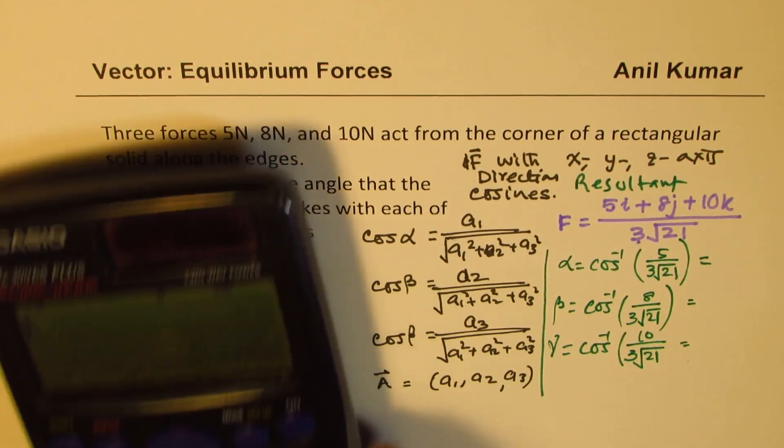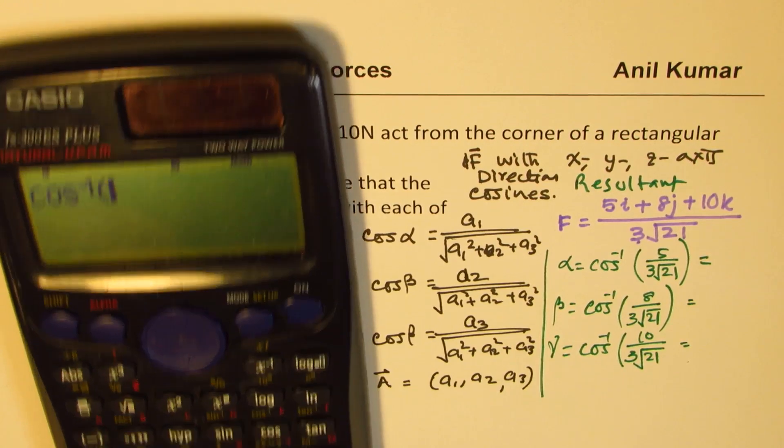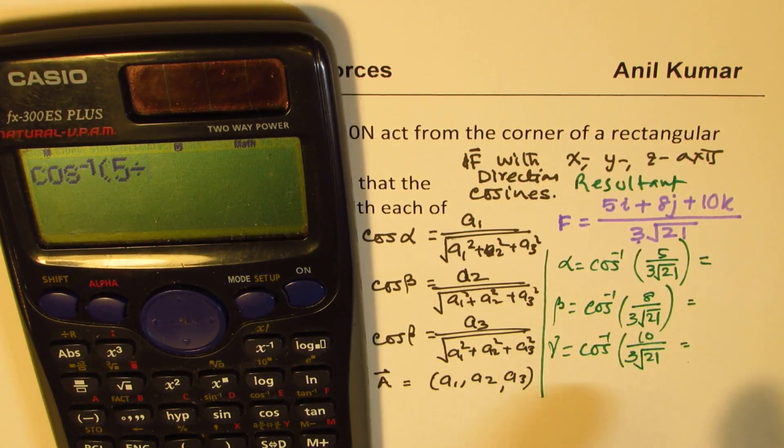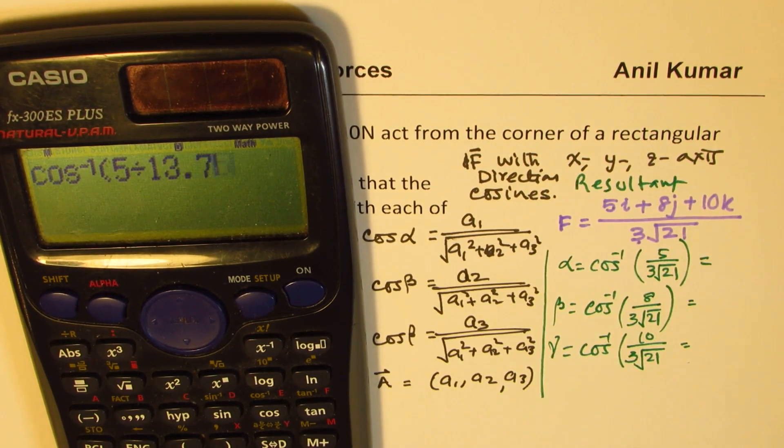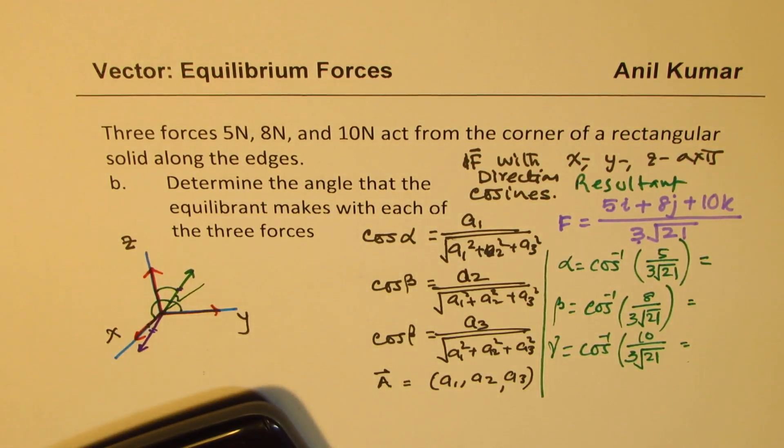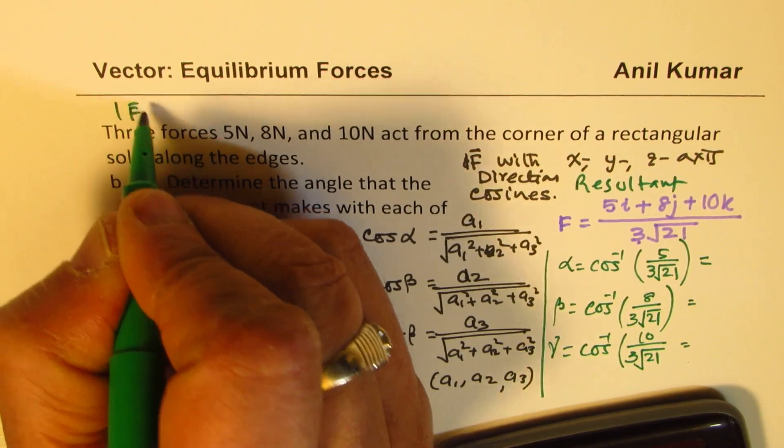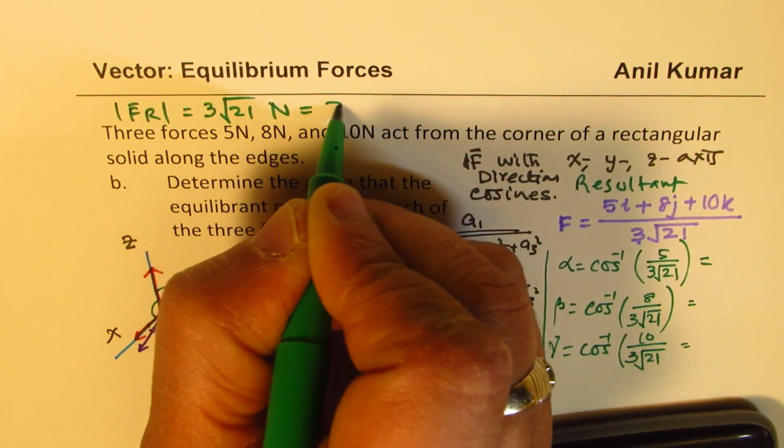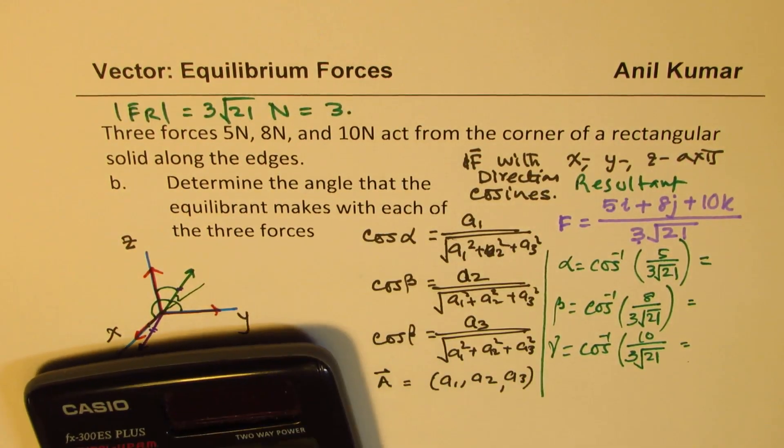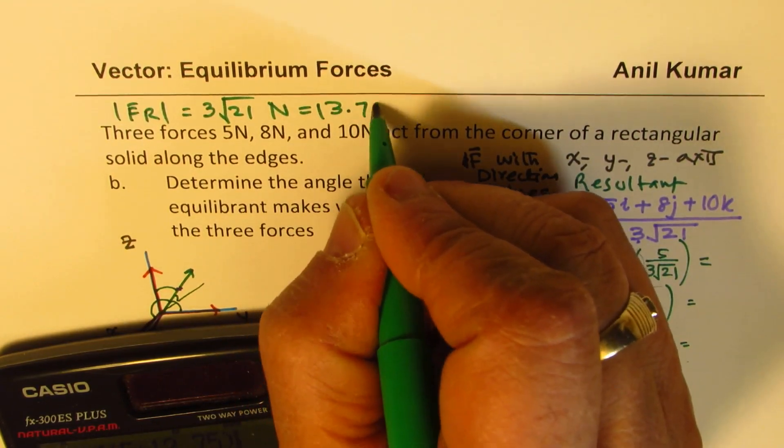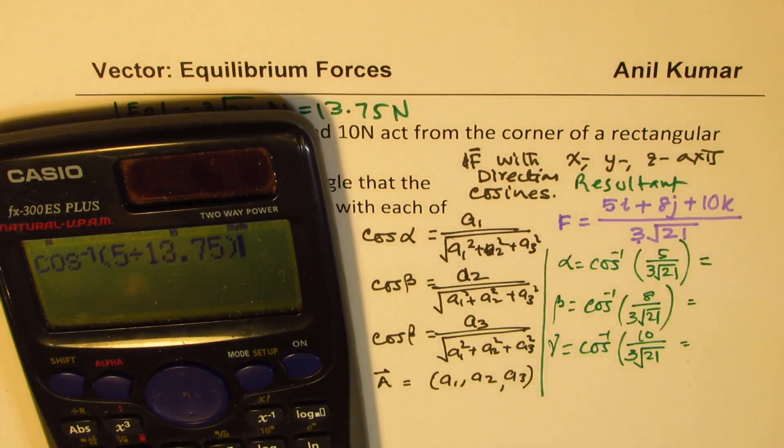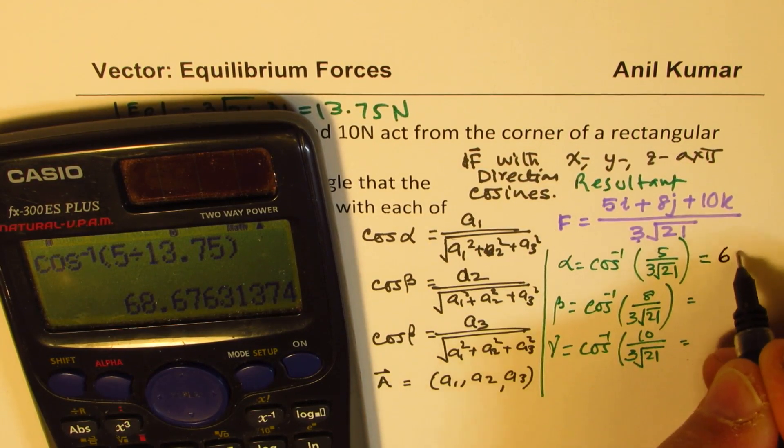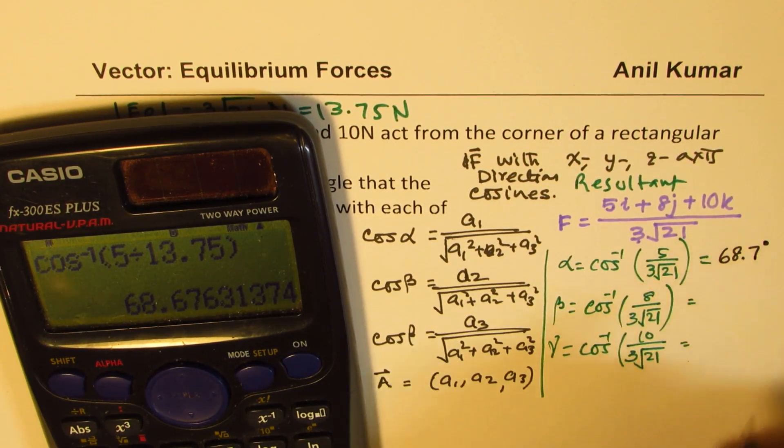So let's use the calculator to find the values. So we're doing cos inverse of 5 divided by - well that was how much magnitude? 13.75. So we're using 13.75. Since we just calculated that the force, the magnitude of this force, the resultant force was 3 square root 21 newtons or 13.75. So we'll use the decimal number 13.75. That gives us the angle and the angle here is 68.67. I'll round it to 7 degrees.